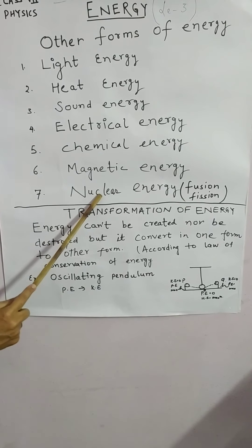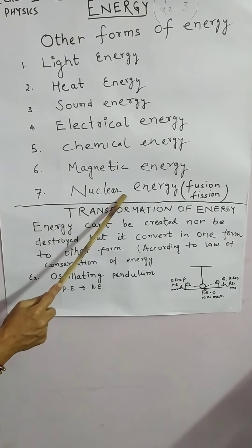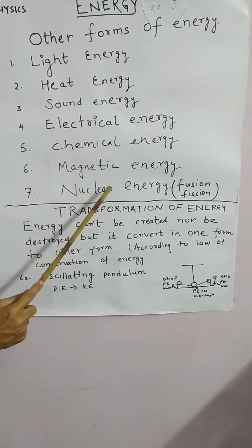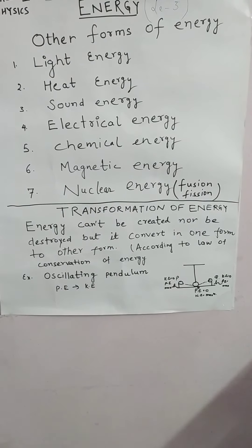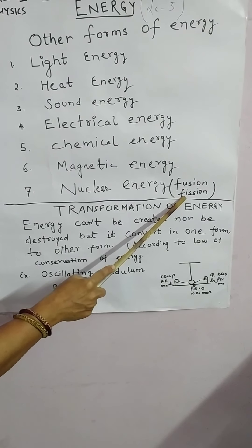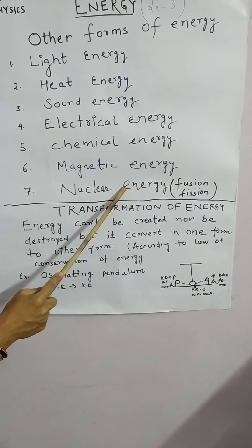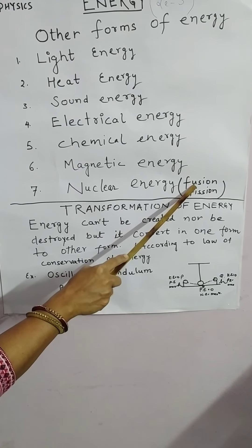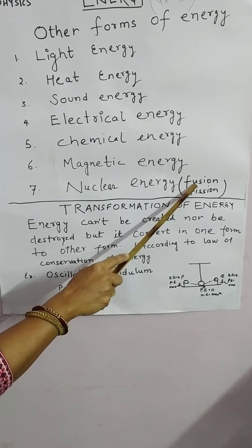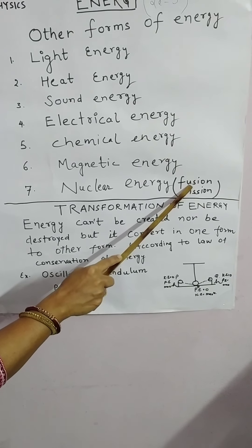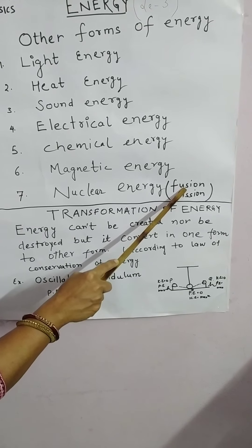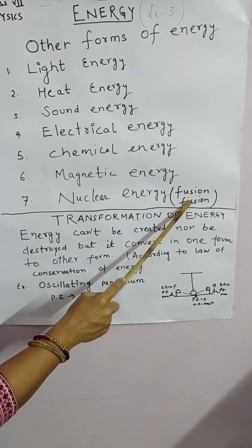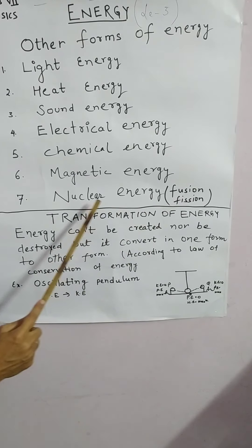Nuclear energy. The energy stored by the nucleus of an atom is called nuclear energy. Fission and fusion are the two processes in which nuclear energy is released. Fusion means the combination of two light nuclei to form a heavy nucleus. And fission means a heavy nucleus splits into light nuclei.